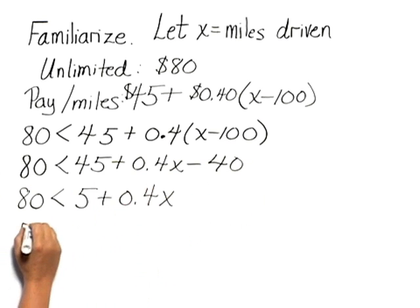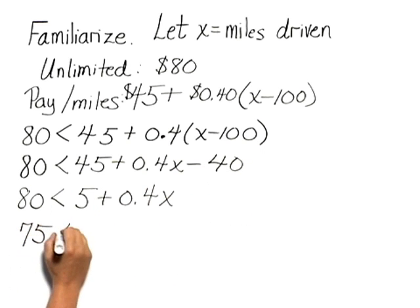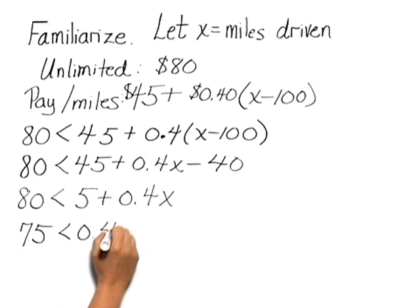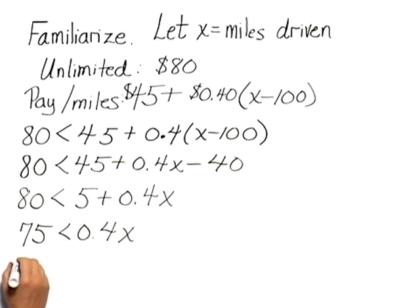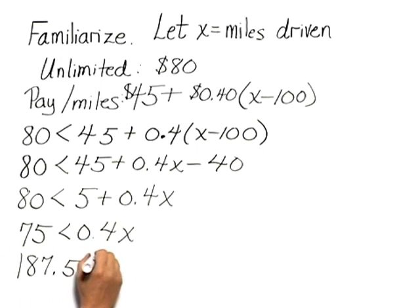That gives us 80 is less than 5 plus 0.4X. Subtracting 5 from both sides, we have 75 is less than 0.4X. And dividing both sides by 0.4, we would have 187.5 is less than X.